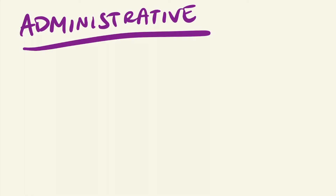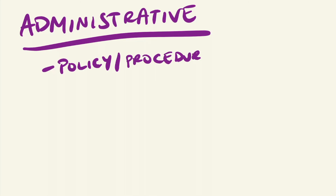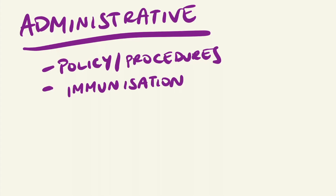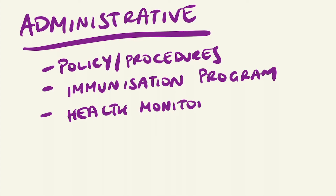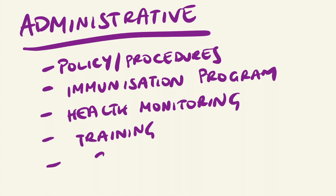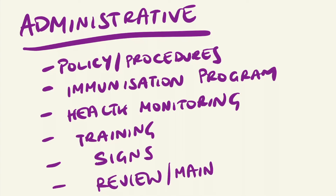Administrative controls include review of policies and procedures, particularly those involving infection control, immunization programs for workers, regular health monitoring of workers, training on safe handling of biological materials, having adequate labeling and warning signs, as well as regular review and maintenance of ventilation and air conditioning.